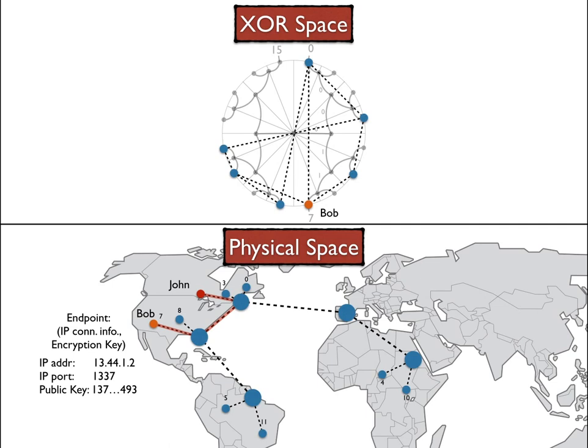I haven't gone into the actual security protocol that goes into having a cryptographically secure channel between Bob and John. Since we haven't introduced the basic principles behind this, we'll see them in future lectures. For now, let's just say that this information is enough for establishing a secure channel between the two.